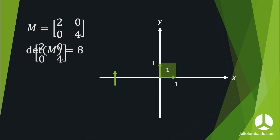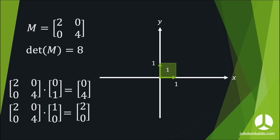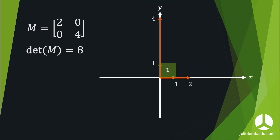When we take the product of this matrix with the first vector, and again with the second vector, we get two new vectors: (0, 4) and (2, 0). Plotting these two vectors geometrically, they form a rectangle, and the area of that rectangle equals eight — the same as the determinant of the matrix.